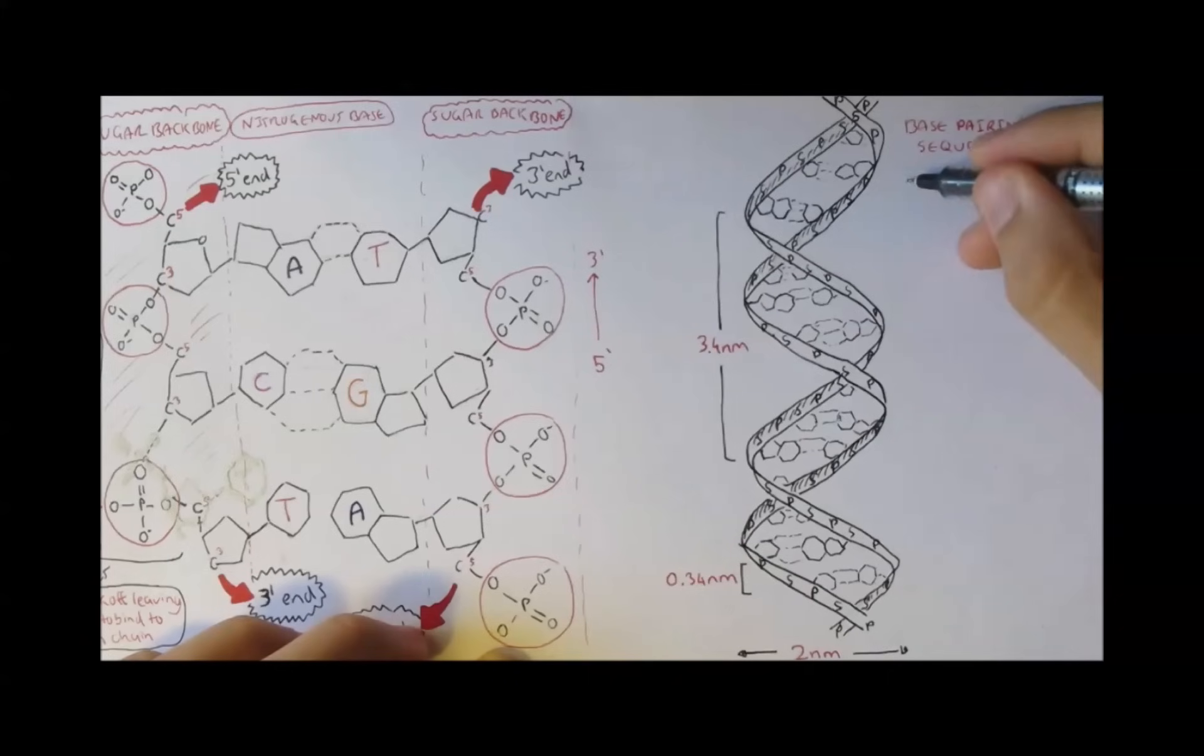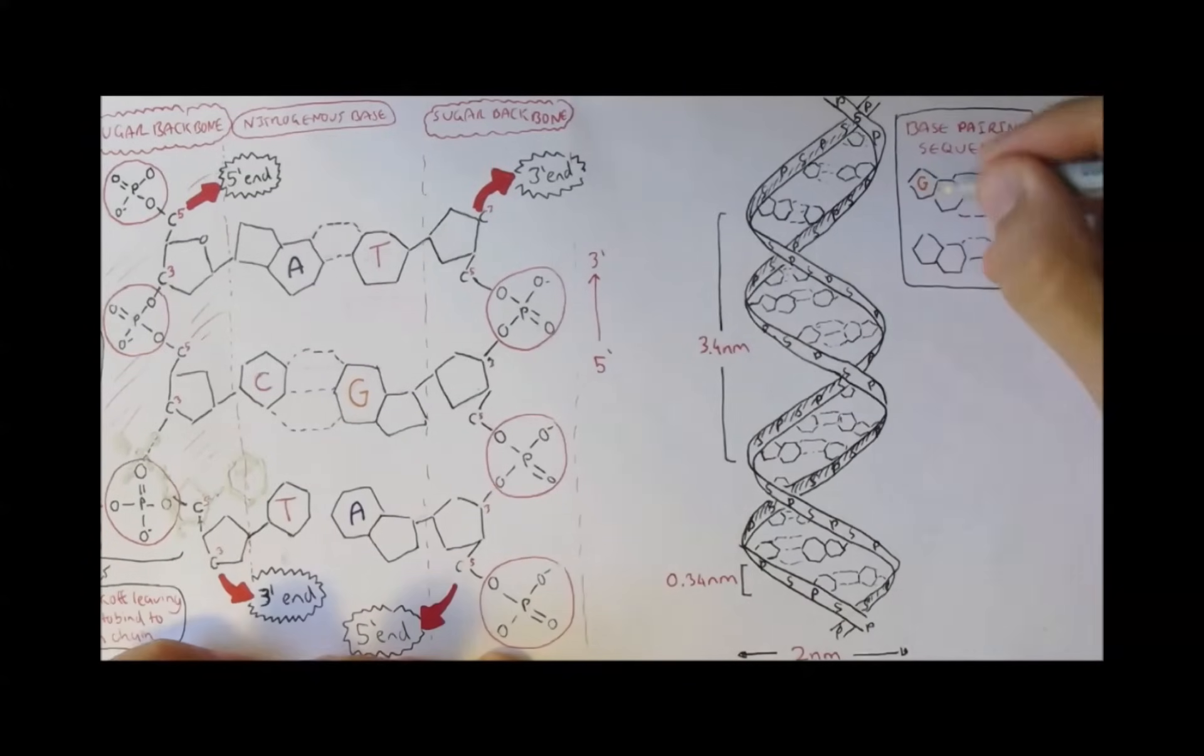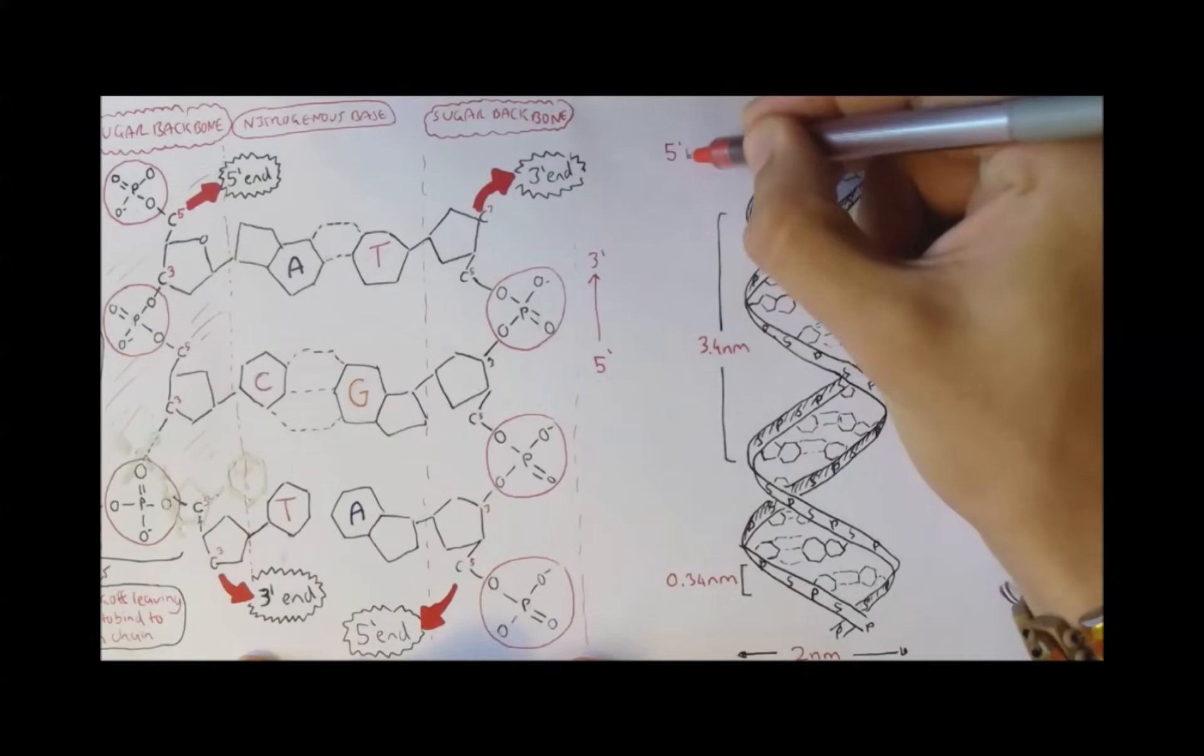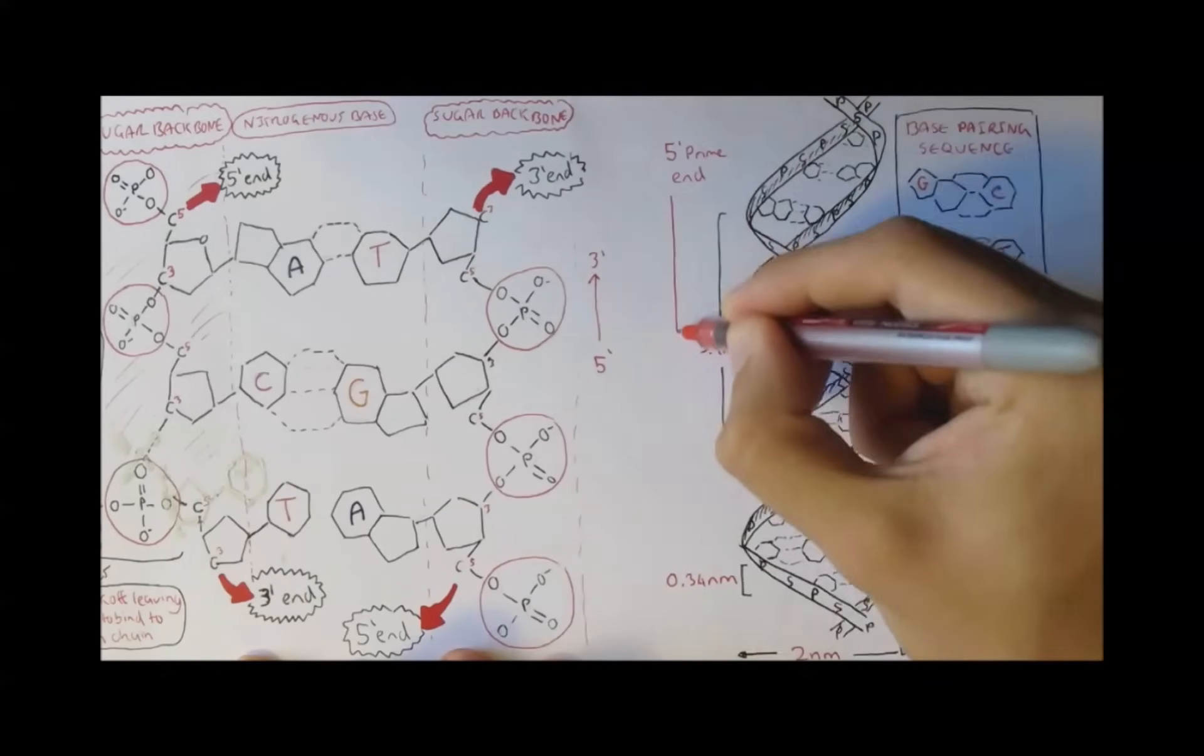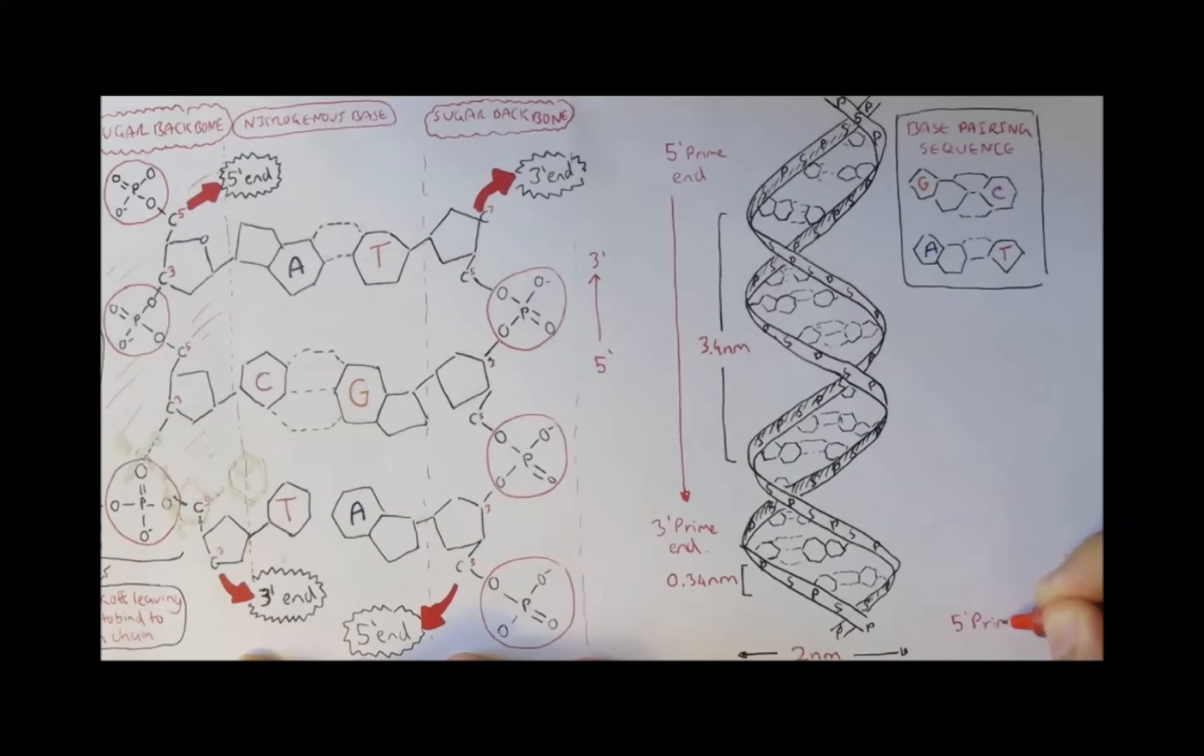The pairing sequence of bases are, if you remember, guanine and cytosine, and thymine and adenine. And one strand runs from the 5' end to the 3' end. And the 5' end on the other strand starts from the bottom, or the other side, and runs up to the 3' end on the top.